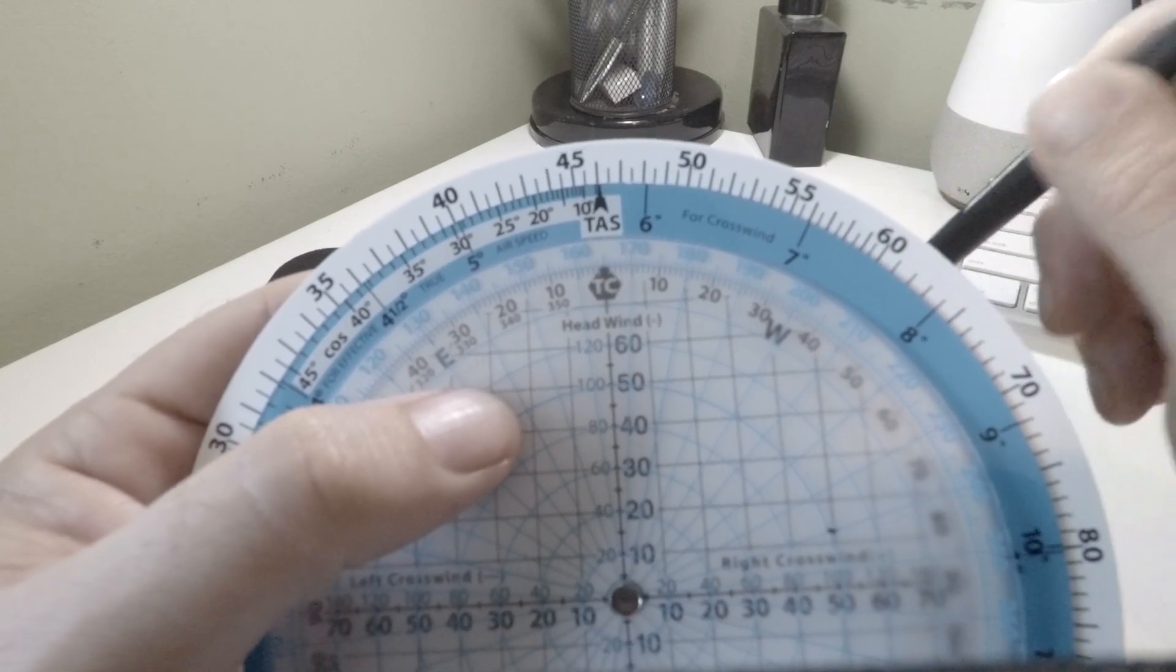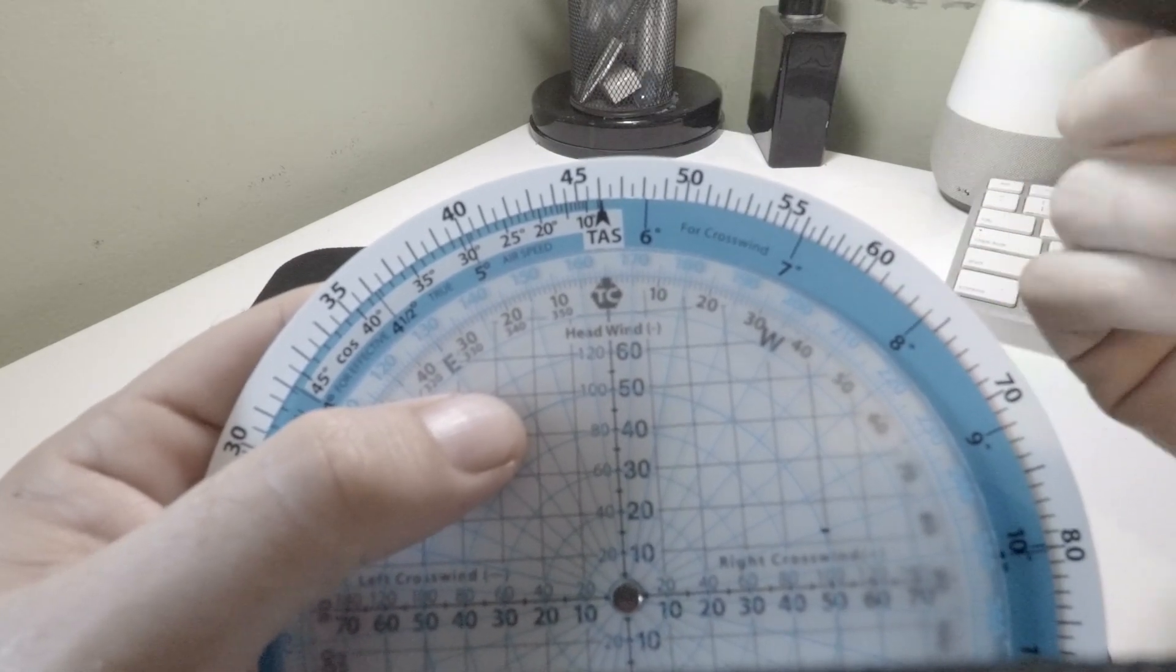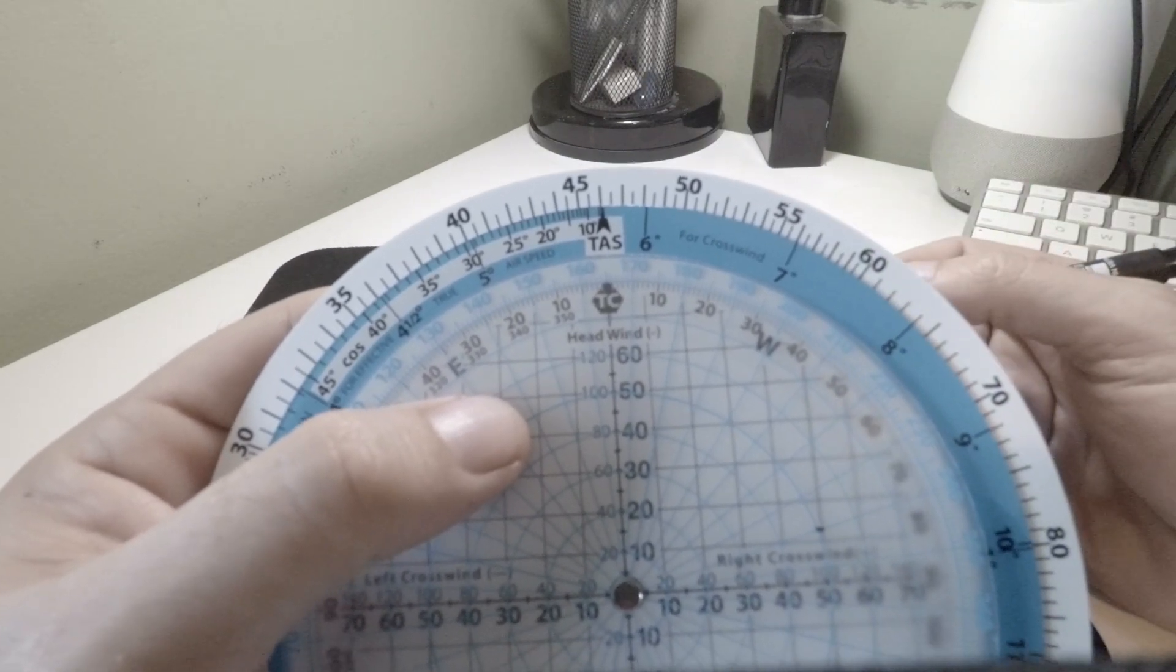So we've been reduced from 460 knots TAS to 450 knots ETAS. That's it.